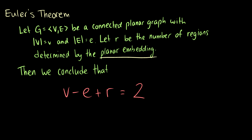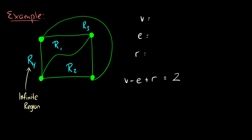As an example, let's take a look at this graph right here. This is K4. We know K4 is going to be a planar connected graph. It has four vertices and the number of edges is going to be 6. And here I have the number of regions equal to 4.